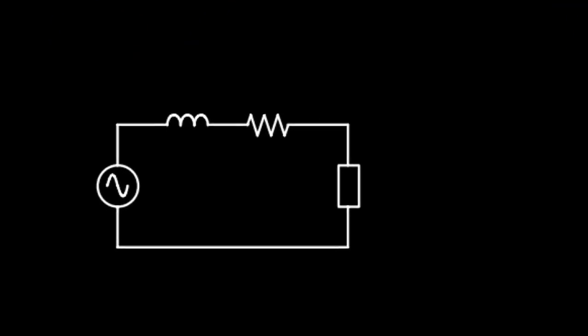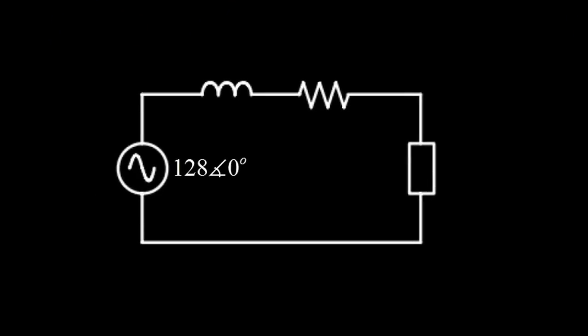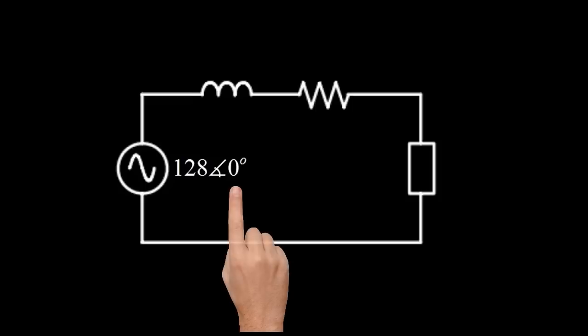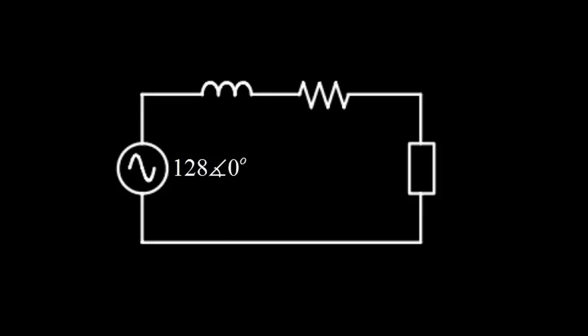This circuit tells us the voltage in the source is 128 volts in my case, and because I need a zero degrees reference for phases, I might as well use that. They're also telling me the source is delivering 9,800 volt-amperes apparent power.